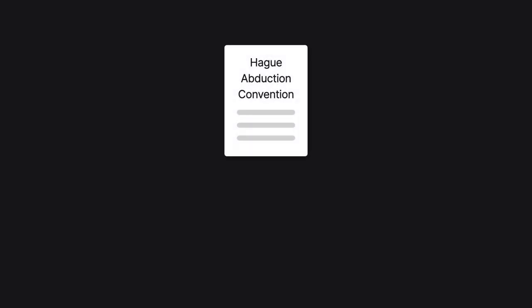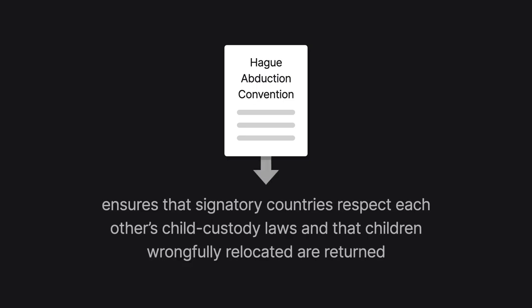The Hague Convention on the Civil Aspects of International Child Abduction, which we'll refer to as the Hague Abduction Convention, was adopted in 1980. Its purpose is to ensure that signatories respect each other's child custody laws and that children wrongfully relocated by one parent are returned to their home country.